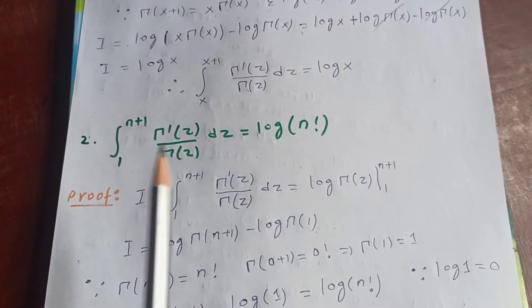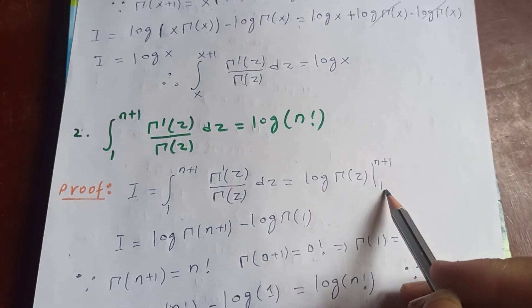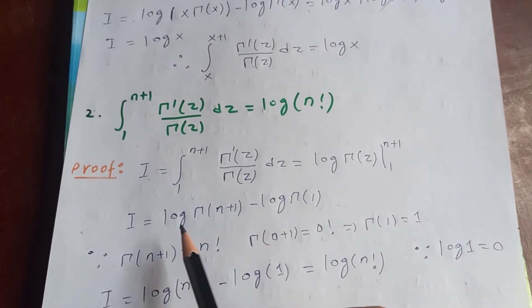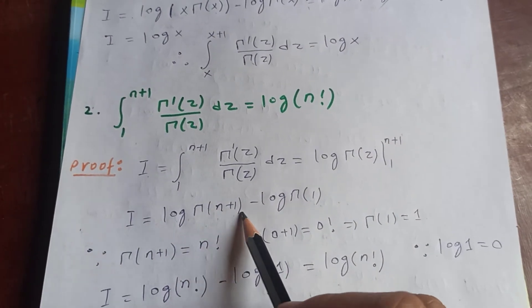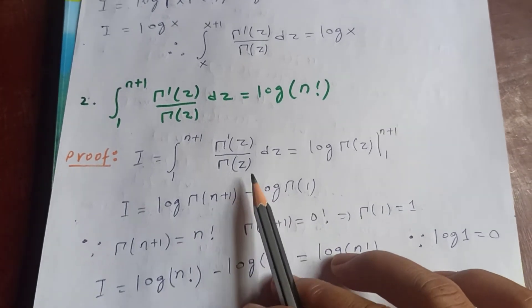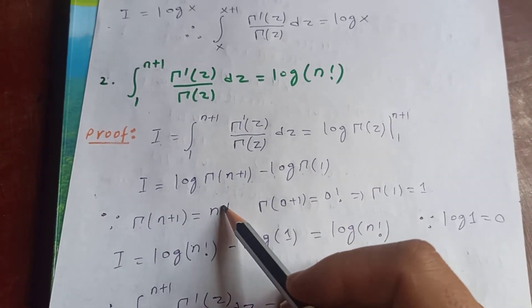Then what do we get? Log of gamma z from 1 to n plus 1. And again, I is log gamma, if you put log gamma n plus 1 minus log gamma of 1. So we know that gamma of n plus 1 is n factorial.